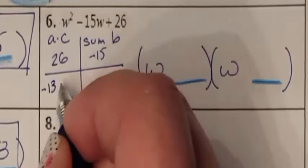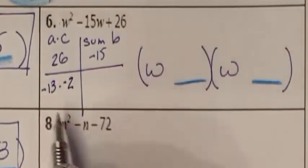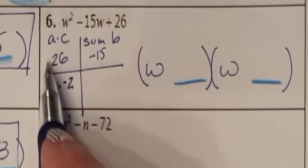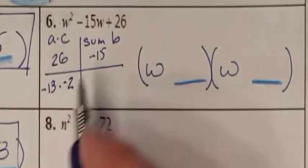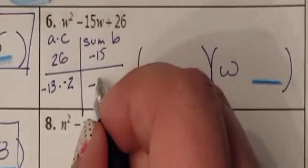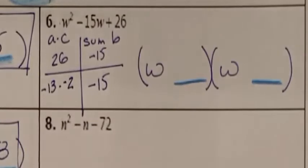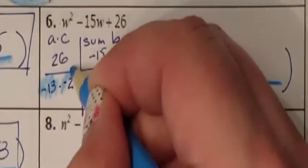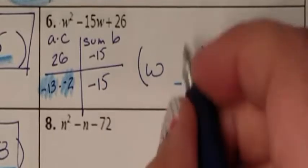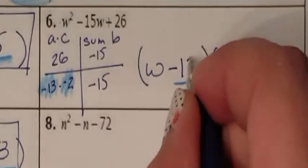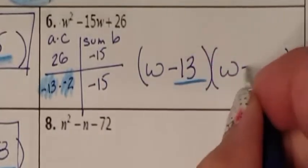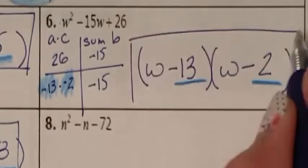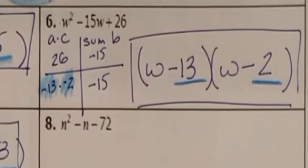Negative 13 and negative 2 multiply together to give me positive 26. When I add these together, I get negative 15. So the two numbers I need are negative 13 and negative 2. So here is minus 13 for my negative 13, and here is minus 2 for my negative 2. And I just factored problem number 6.